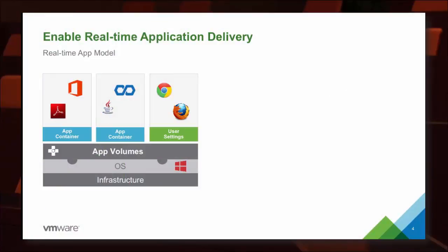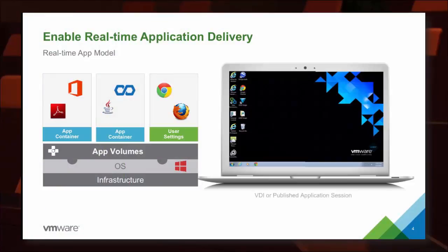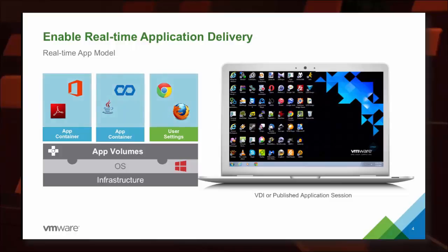Inside the real-time application model, we're moving away from those one-off application deployments to being able to deploy applications holistically right to the desktop — delivering them seamlessly so users instantly get access to tens or even hundreds of applications. And we're no longer doing this across just a few desktops; we're now doing this across hundreds or thousands of desktops.